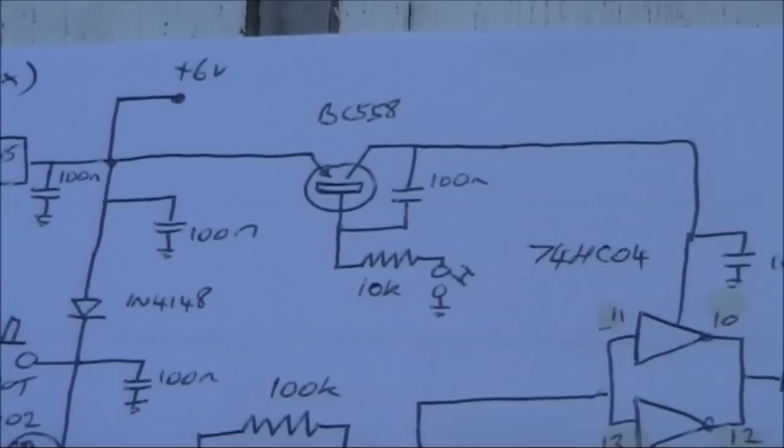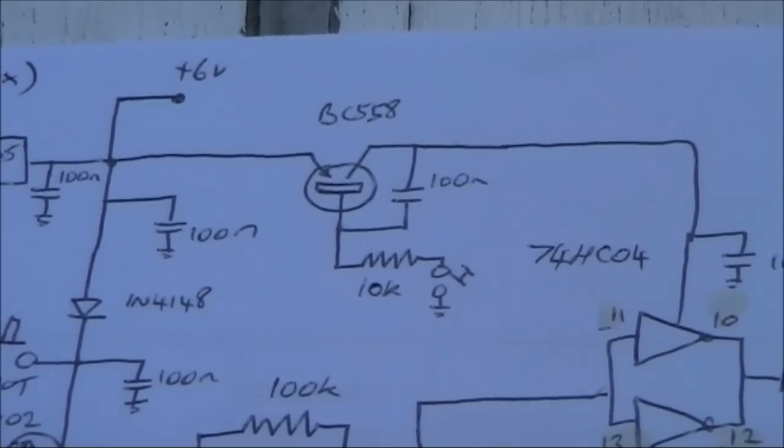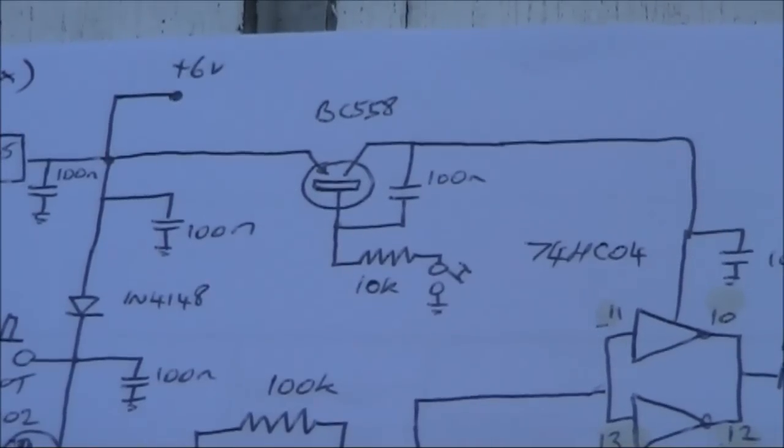The other circuitry here, a BC558, though it could be any transistor. A PNP though, like a 2N3906. Anyway, the function of that is to provide a keyed DC voltage.